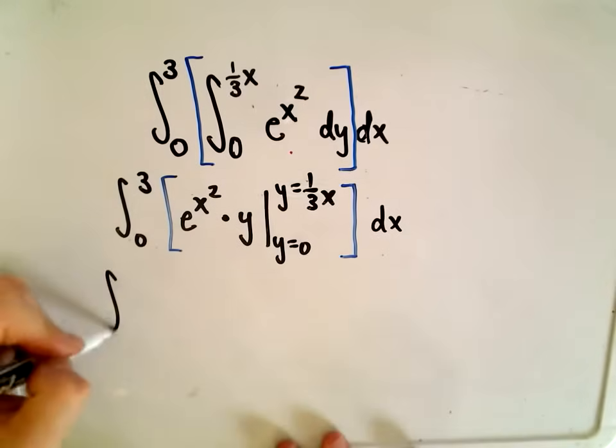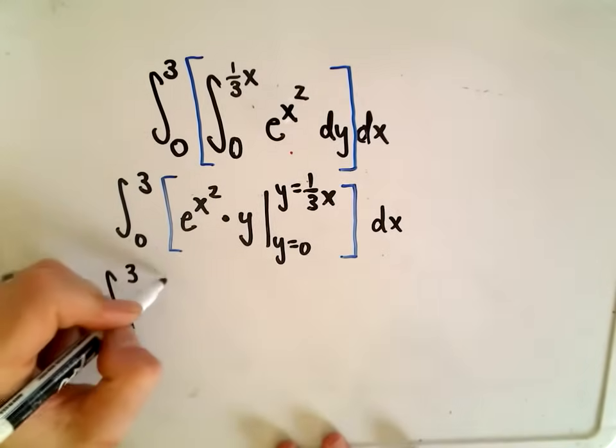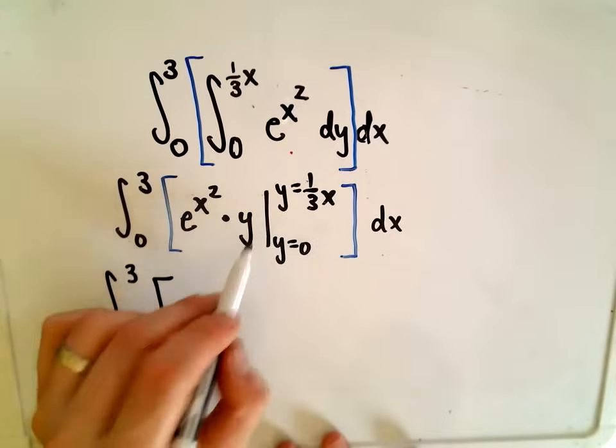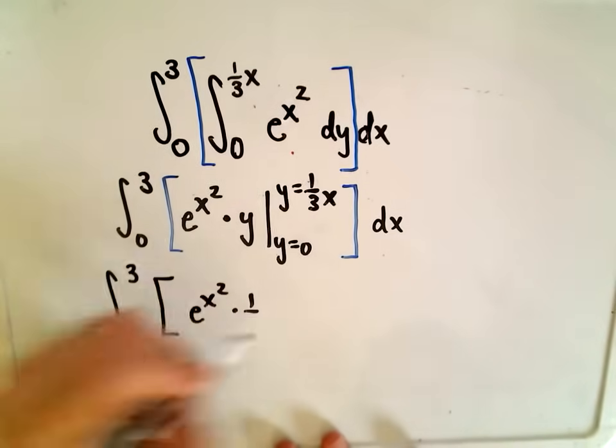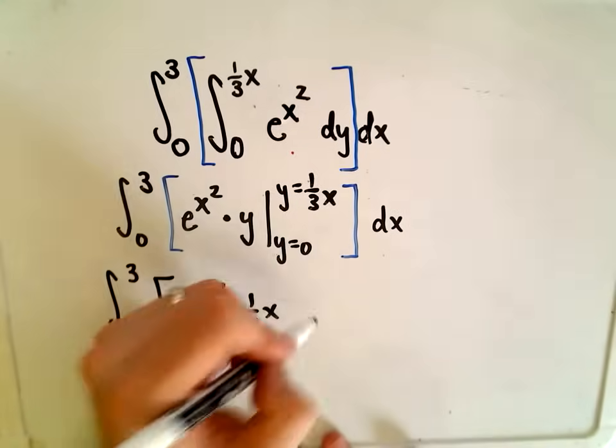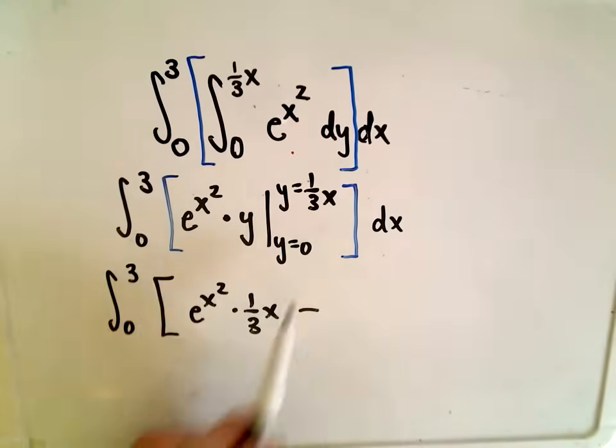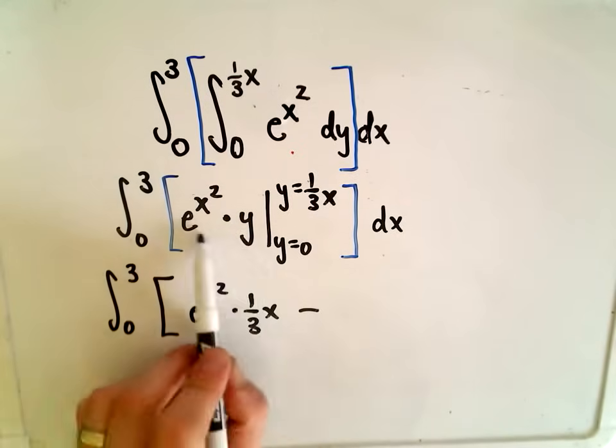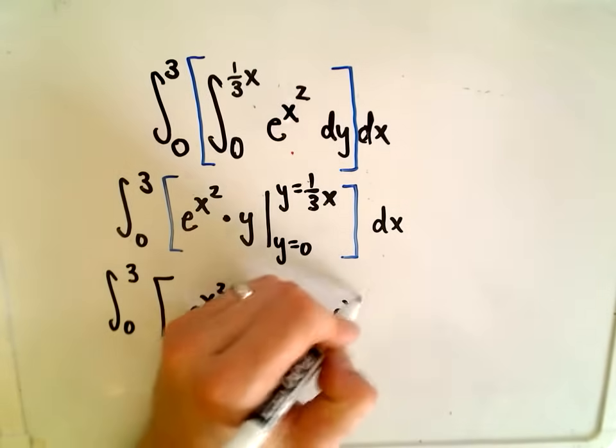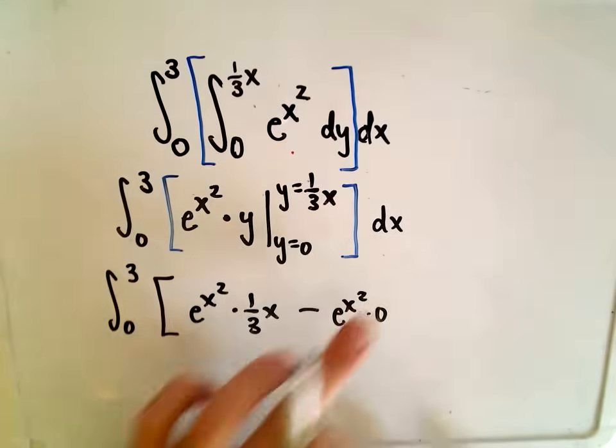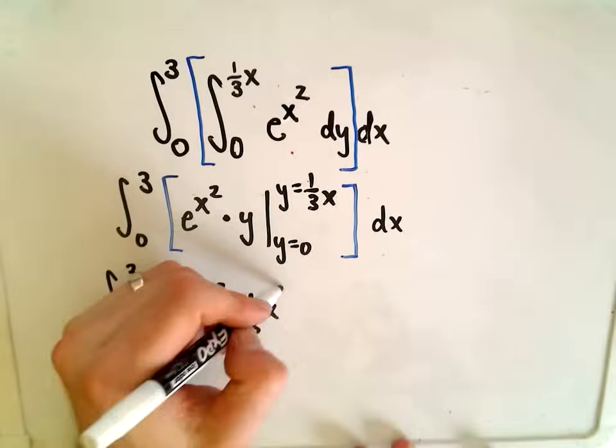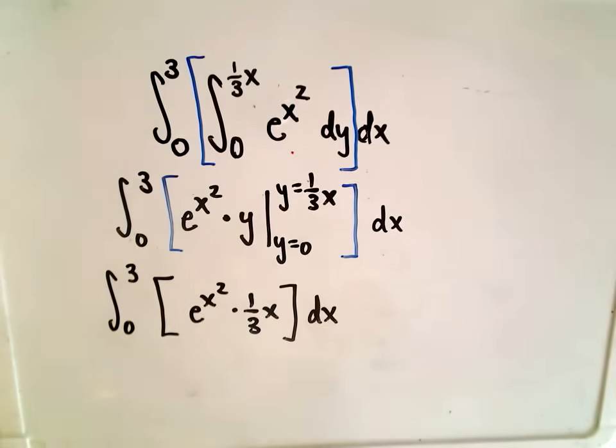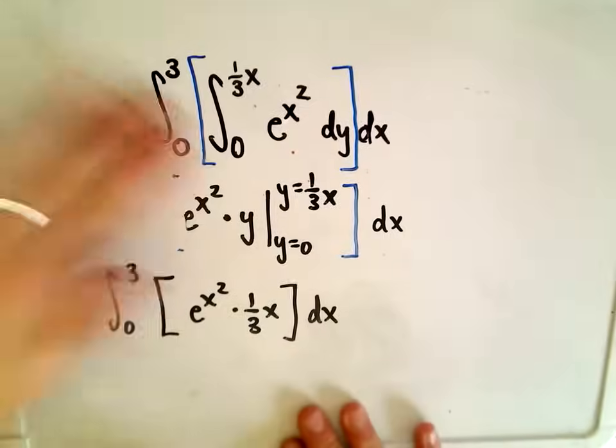Okay, so let me evaluate this from 0 to 3. So I'm plugging in y equals one-third x. So I'm going to get e to the x-squared times one-third x. And then the lower limit of integration, when you just plug in y equals 0, you'll have e to the x-squared times 0, which is simply going to cancel out the lower limit of integration and make it 0. dx. So now we simply have to integrate this, and we're almost there.